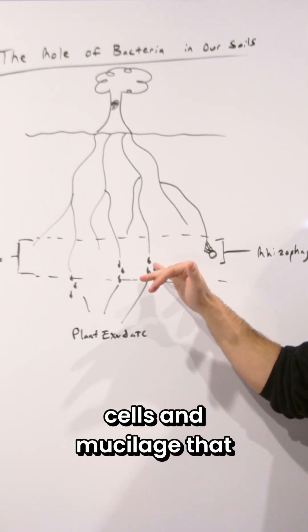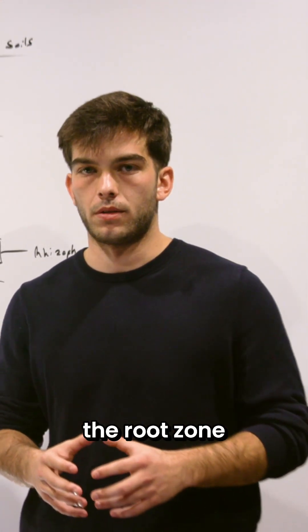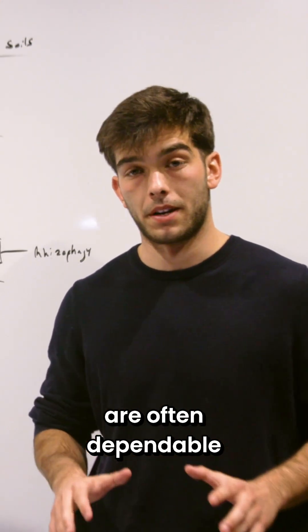Root growth itself releases cells and mucilage that bacteria quickly colonize. They remain close to the root zone where moisture and nutrients are often dependable.